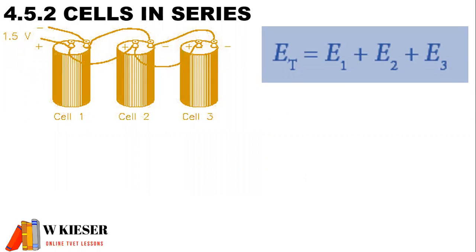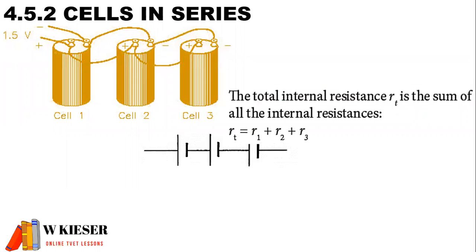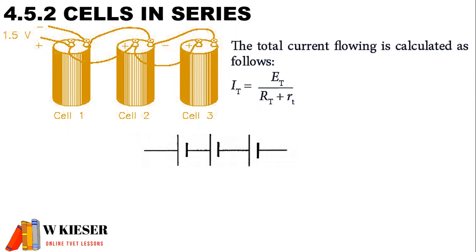When looking at cells connected in series, to calculate the total EMF of the battery, we add up the internal EMF for each cell. The total internal resistance is the sum of all the internal resistances. To calculate the total current flowing, the supply current equals the total EMF divided by the total resistance, which is the sum of the external resistor and the total internal resistance.